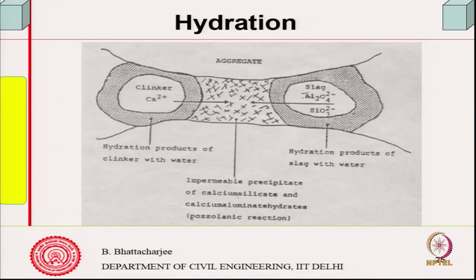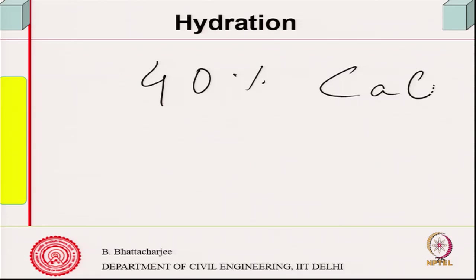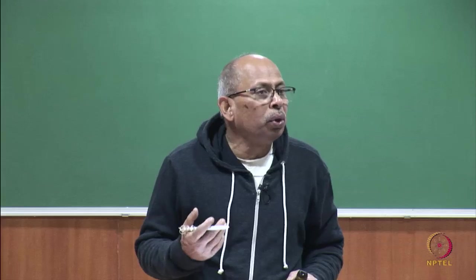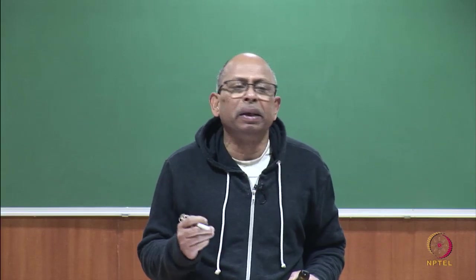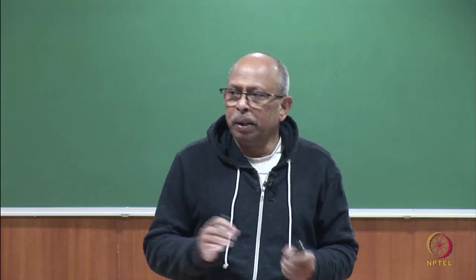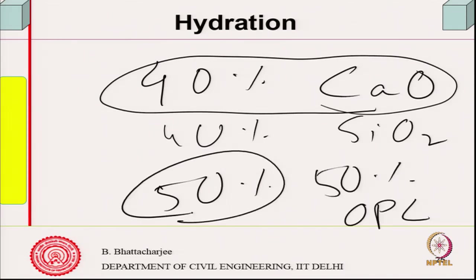For slag: slag can react because it contains about 40% calcium oxide and nearly 40% SiO₂. Since it is rich in calcium and has been heated together, it can show cementitious reaction, but not on its own — only when activated by some alkalis. Generally, alkali activation is done; if you replace, for example, 50% OPC with 50% slag — and in fact you can go up to 70% by IS code — the OPC component will activate the slag reaction.